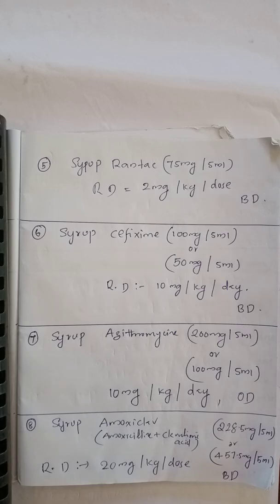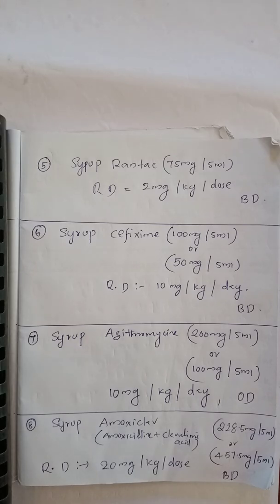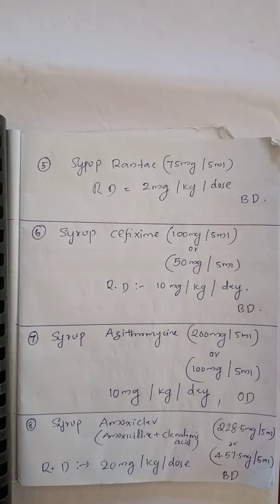The available strength is 100 mg per 5 ml and the recommended dosage is 10 mg per kg per day, given twice daily. For example, if the baby is 10 kg: 10 × 10 mg = 100 mg per day. Available strength is 100 mg per 5 ml, so 100 ÷ 100 × 5 = 5 ml per day, divided by 2 = 2.5 ml per dose, given twice daily.